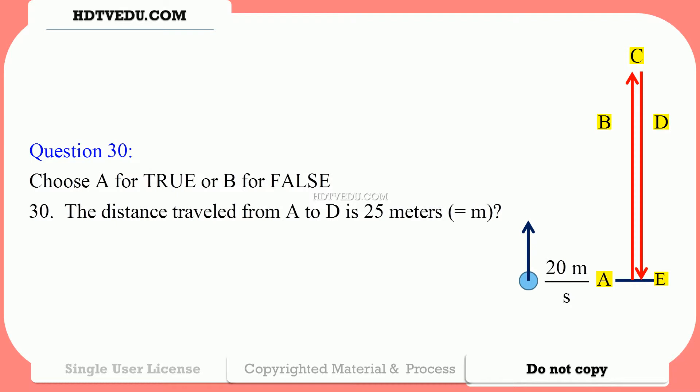From 10, after one second, it will be 10 plus negative 10, which will be 0 at point C. And from 0, it will be 0 plus negative 10, and that will be negative 10 meters per second at point D, as in David.